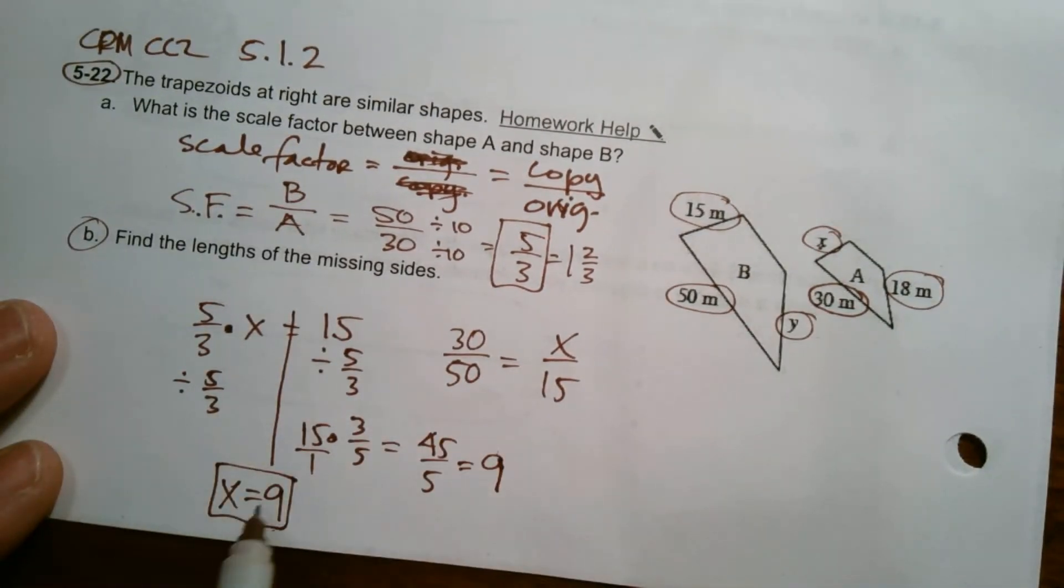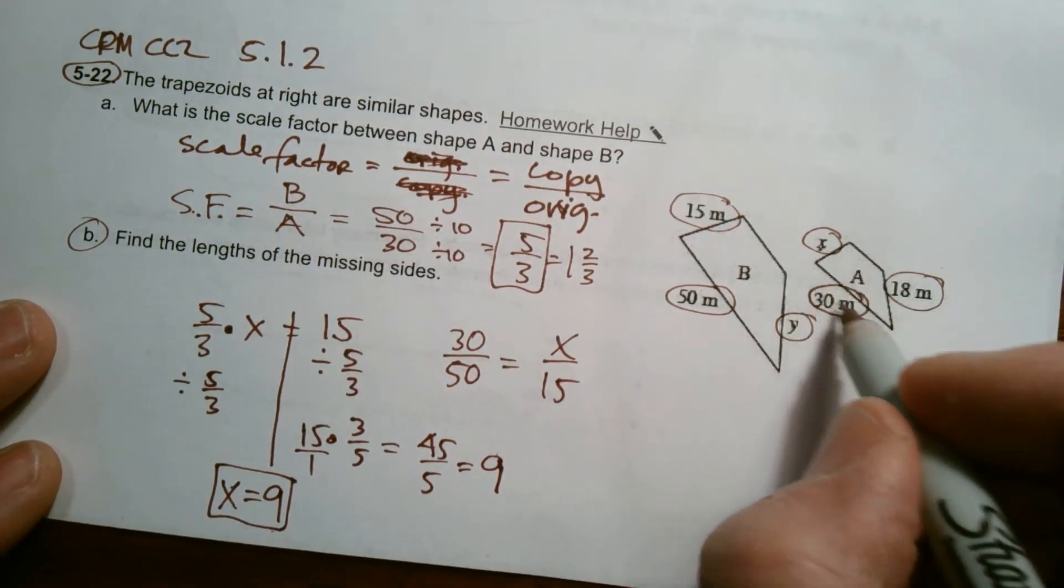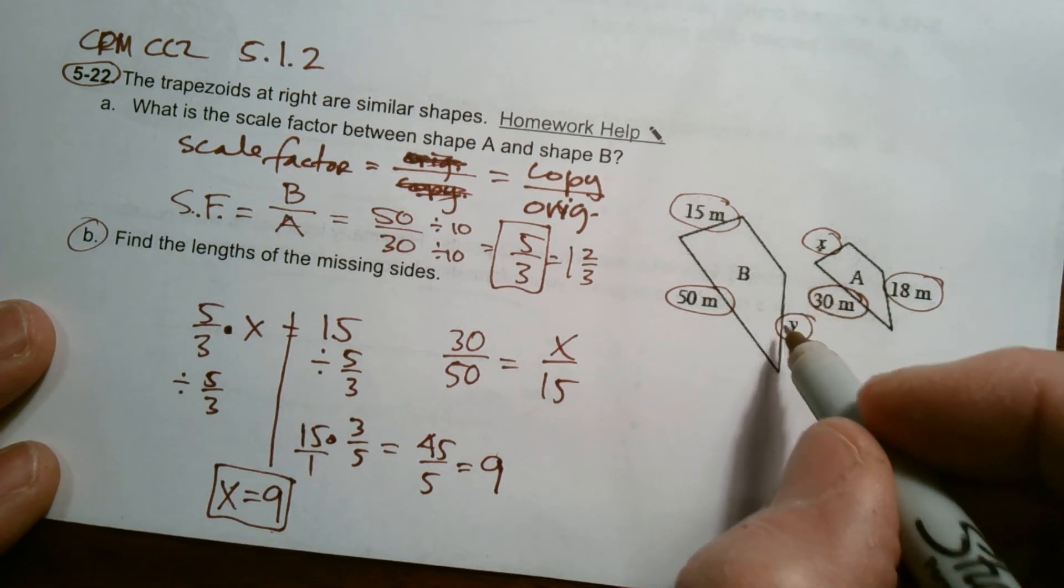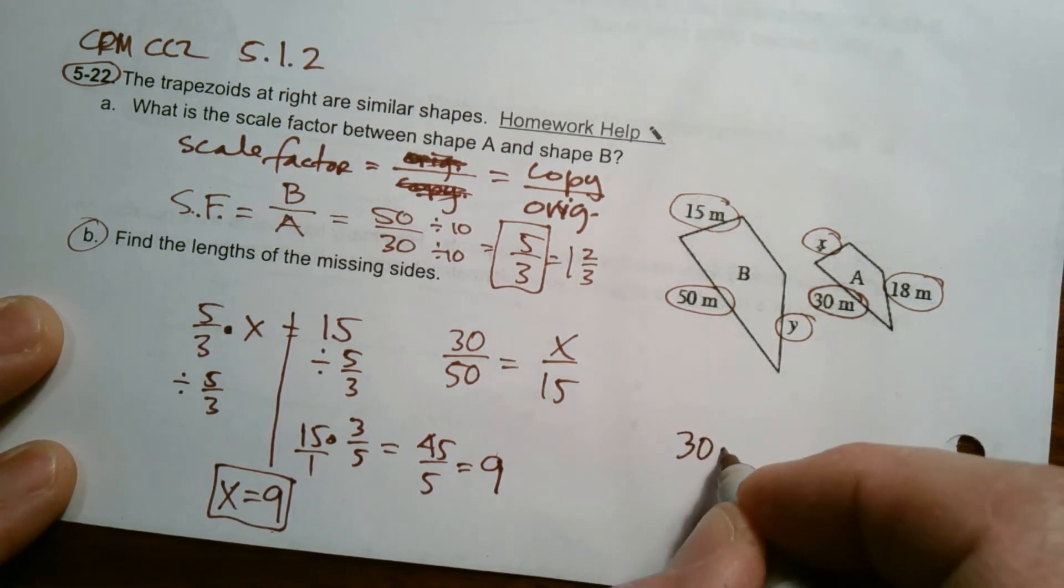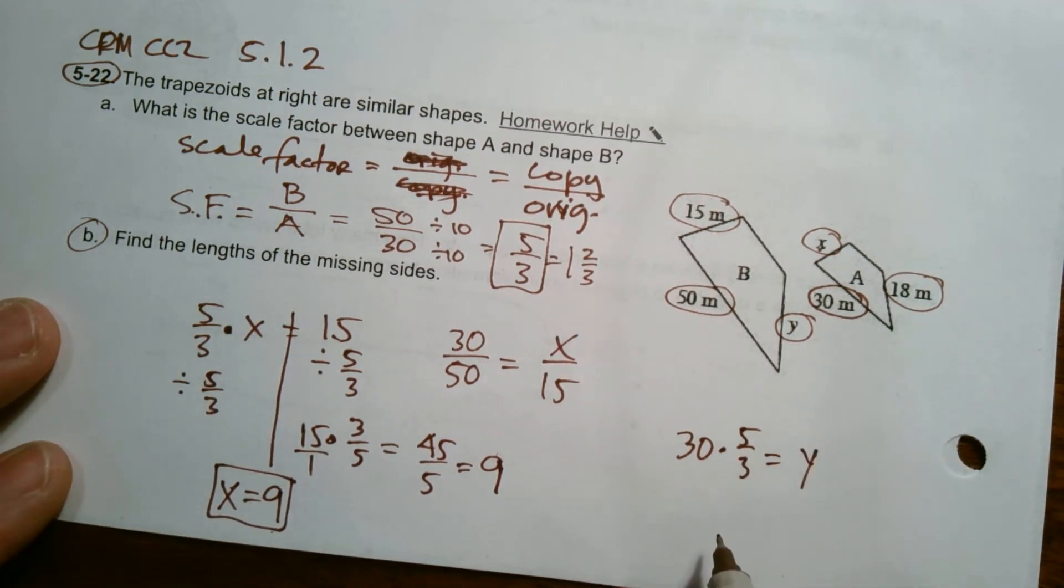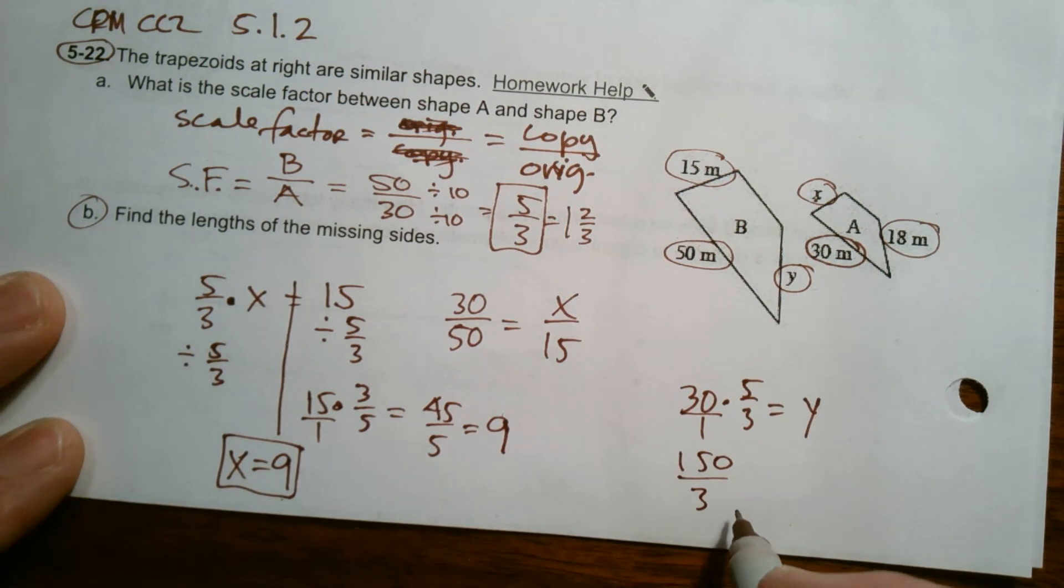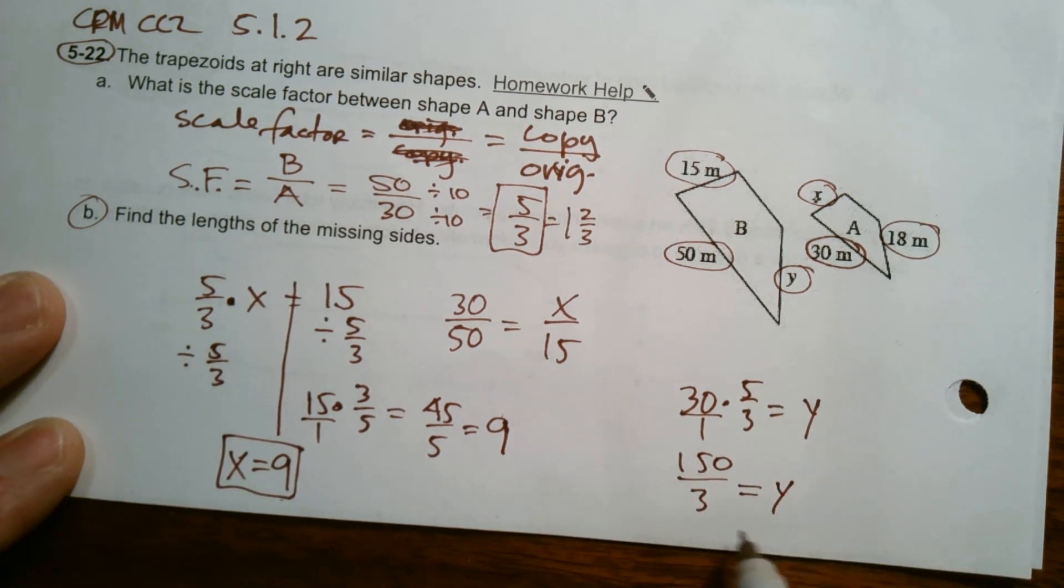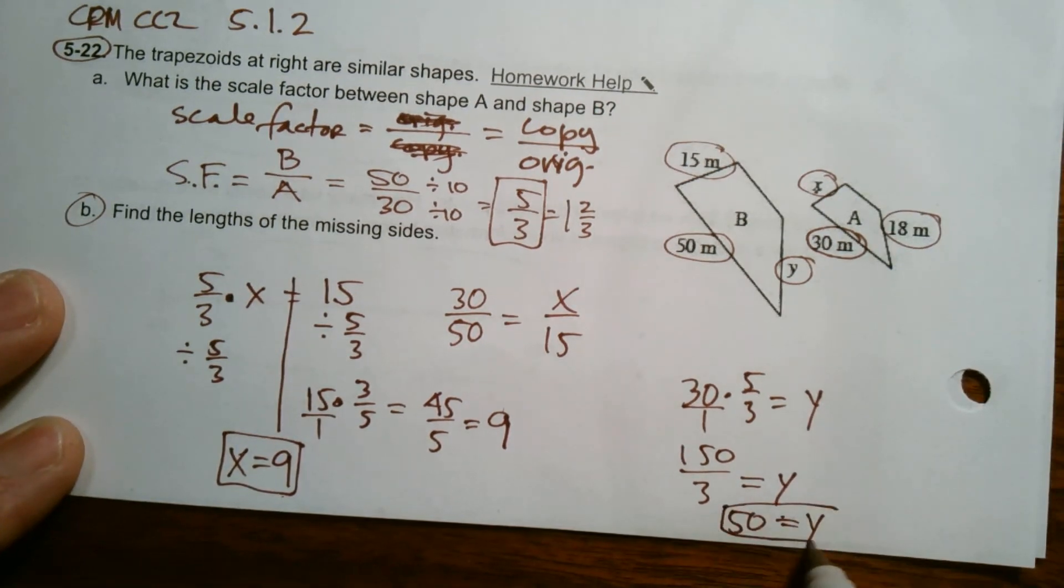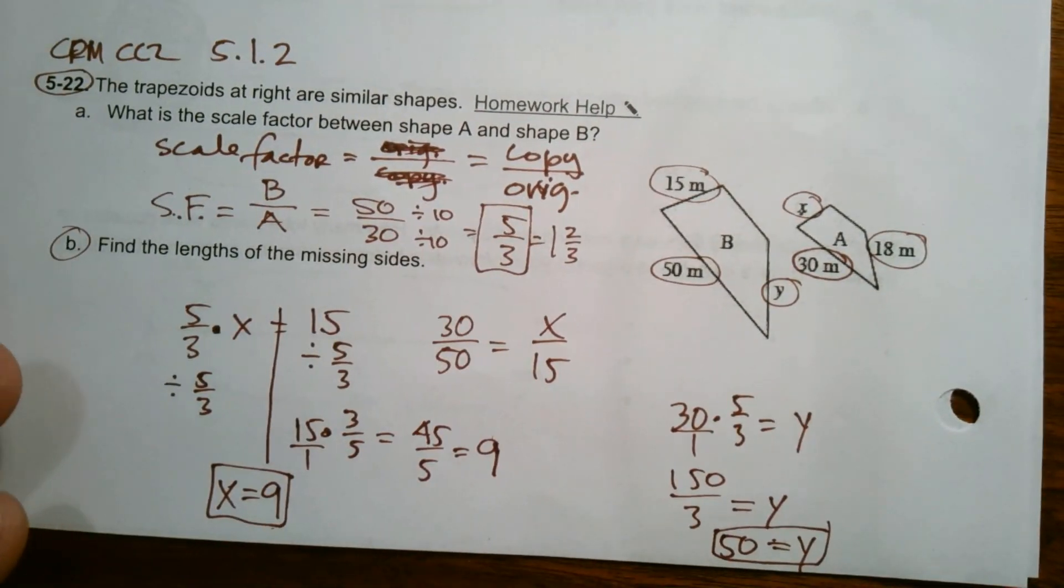So we're good there. I'll move on to Y now, how to find Y. Well, remember my scale factor: I multiply A to get B. So I'm going to take A, which in this case is 30, and multiply 30 times 5/3 to get Y. So this one's already set up for us. 30 times 5/3, again put the whole number over one, multiply straight across, you get 150 over 3 is my Y, which 150 divided by 3 is 50. So Y is equal to 50, X equals 9, scale factor is 5/3. There you go.